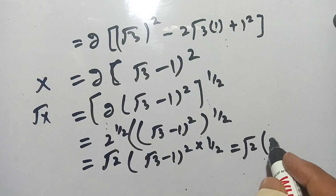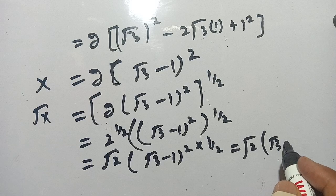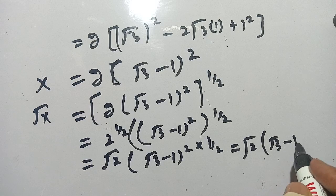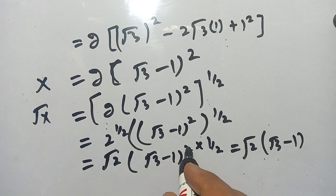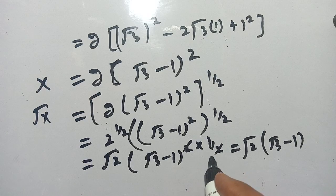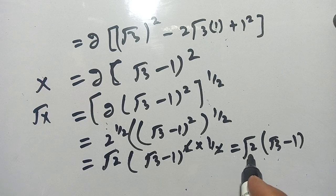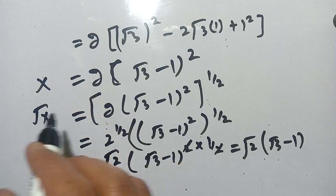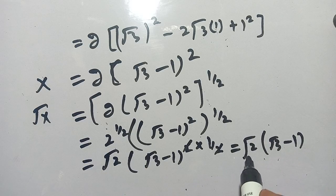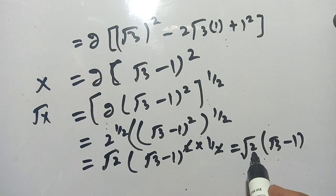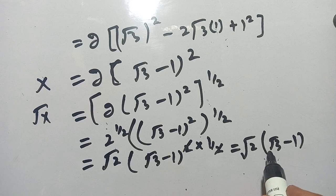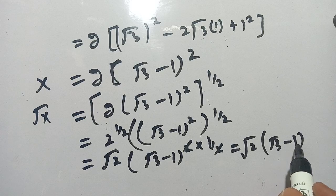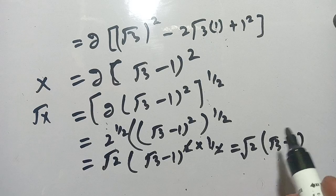We get square root 2 times (square root 3 minus 1), since the squared power and the 1/2 power cancel each other. Thus the value of square root of x is equal to square root 2 times (square root 3 minus 1).